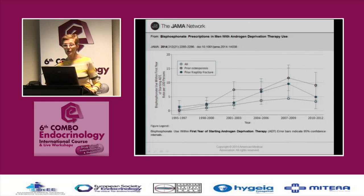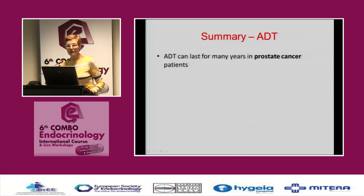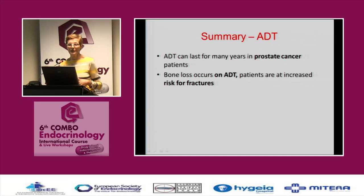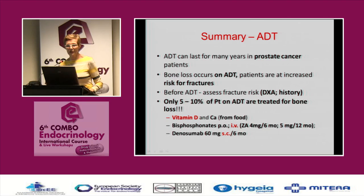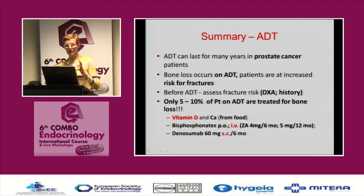The same general measures apply for men as for women on aromatase inhibitors — physical activity, calcium, vitamin D, avoiding alcohol and smoking. Evaluate bone mineral density by DEXA, use FRAX, and start early treatment when T-score is minus 2.5 or minus 1.0 with other risk factors present. Bisphosphonates and denosumab both show benefit — patients gain bone mineral density with zoledronate or oral bisphosphonates, and denosumab reduces fracture risk. Unfortunately, in real life only 2% to 5% of patients on androgen deprivation treatment receive anti-osteoporotic therapy. We must make urologists and oncologists aware of fracture risk.